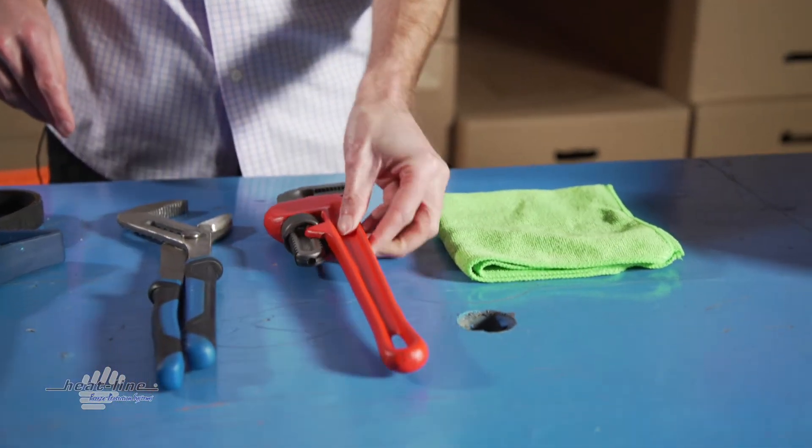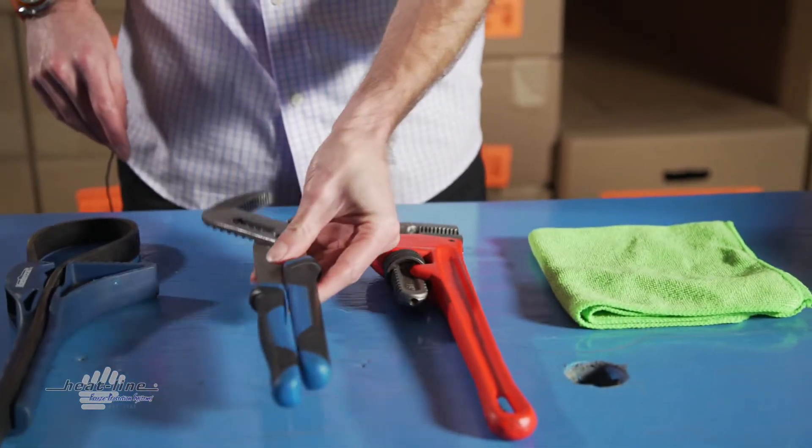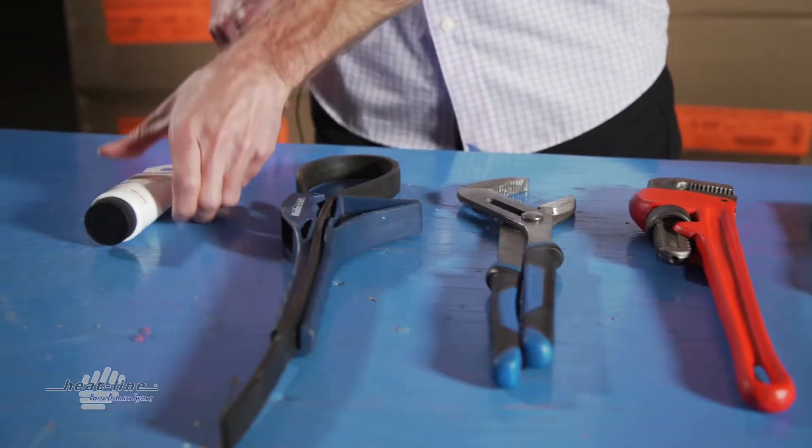To perform this procedure, you will need a clean rag, either a pipe wrench, channel lock or strap wrench, and lubricant.